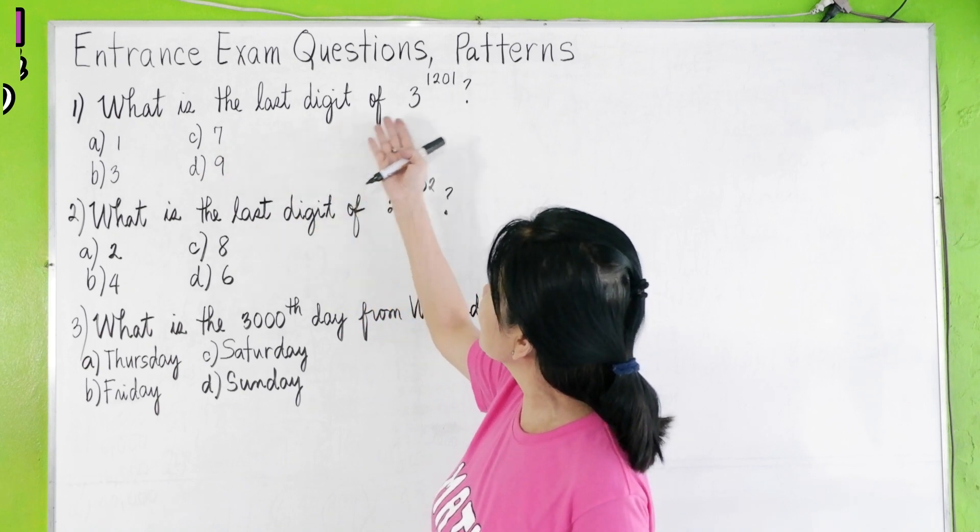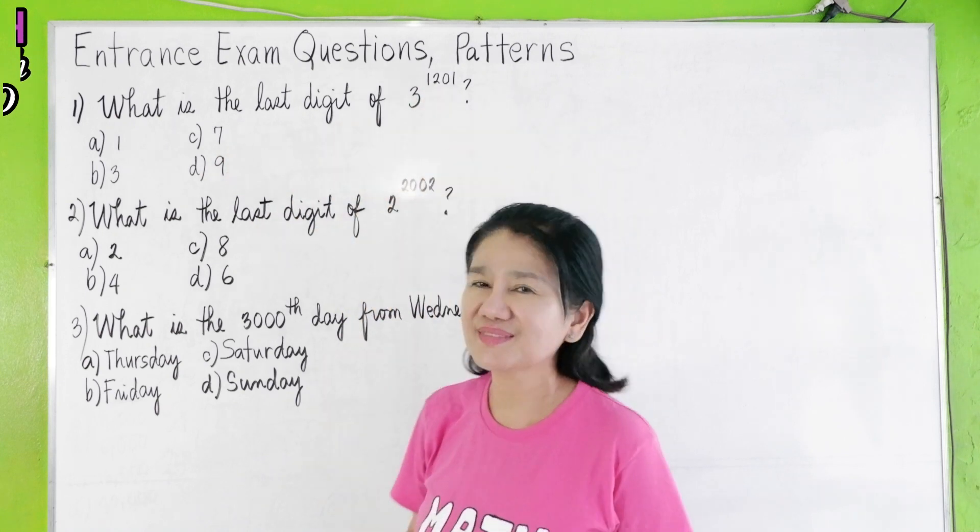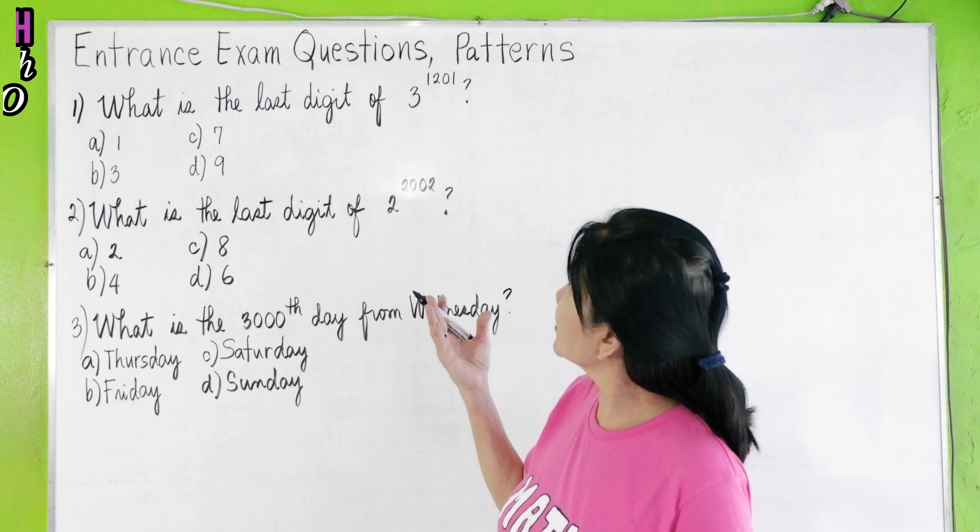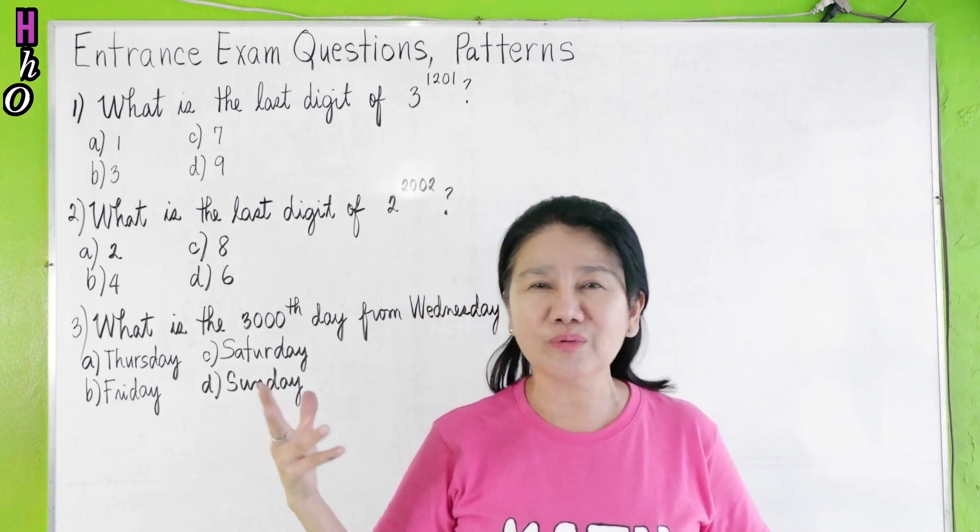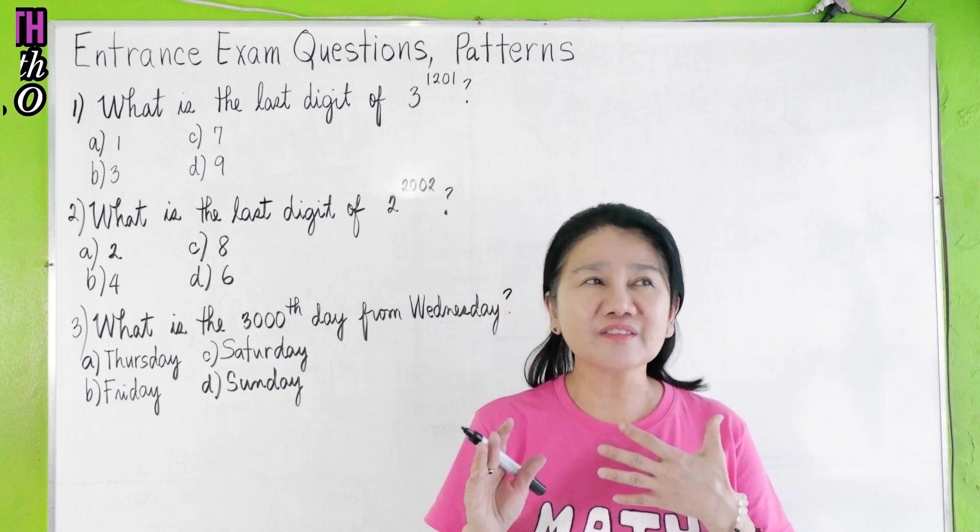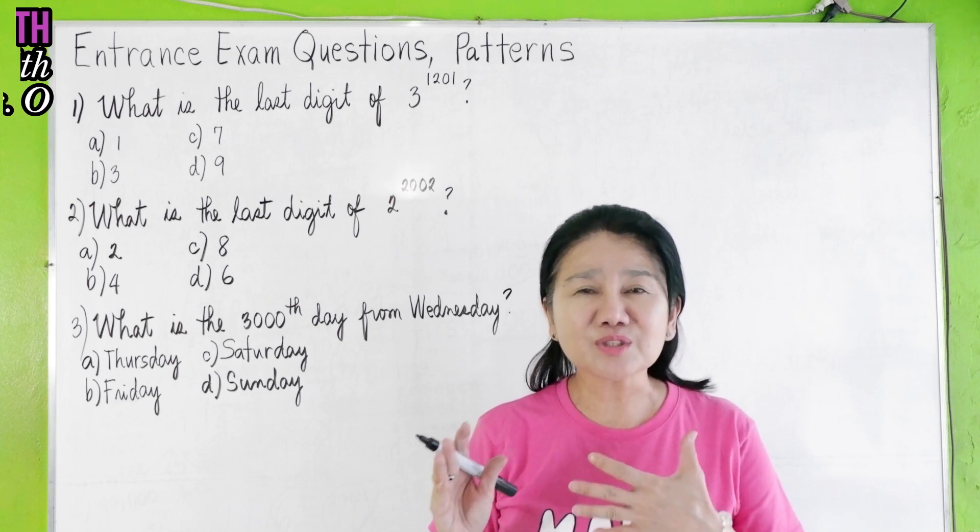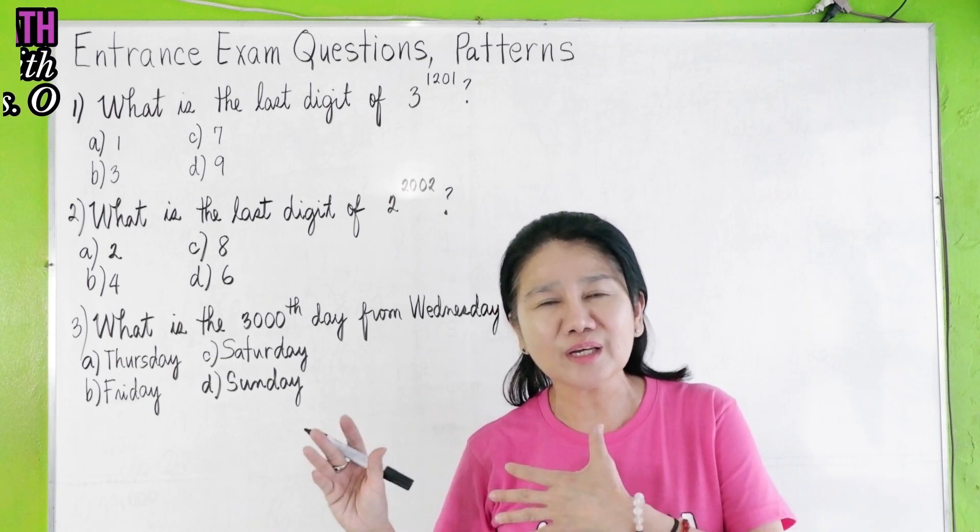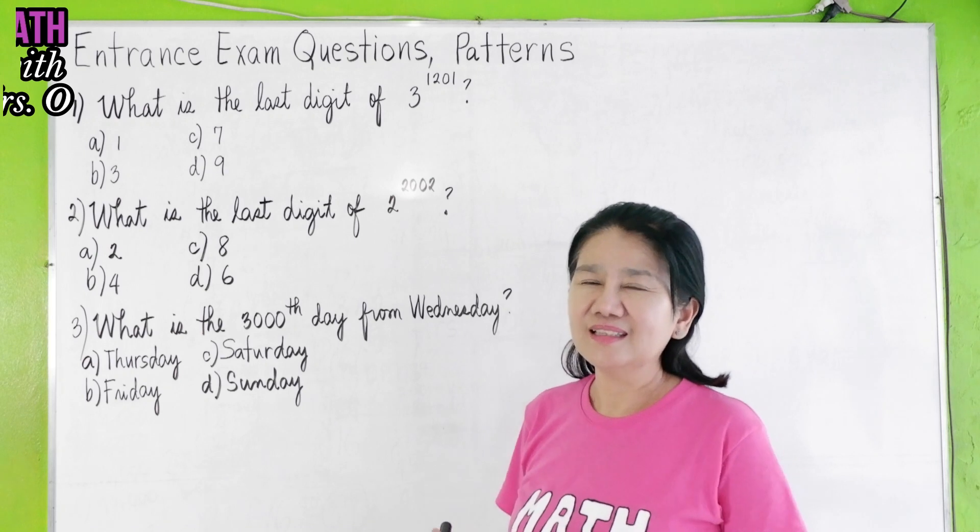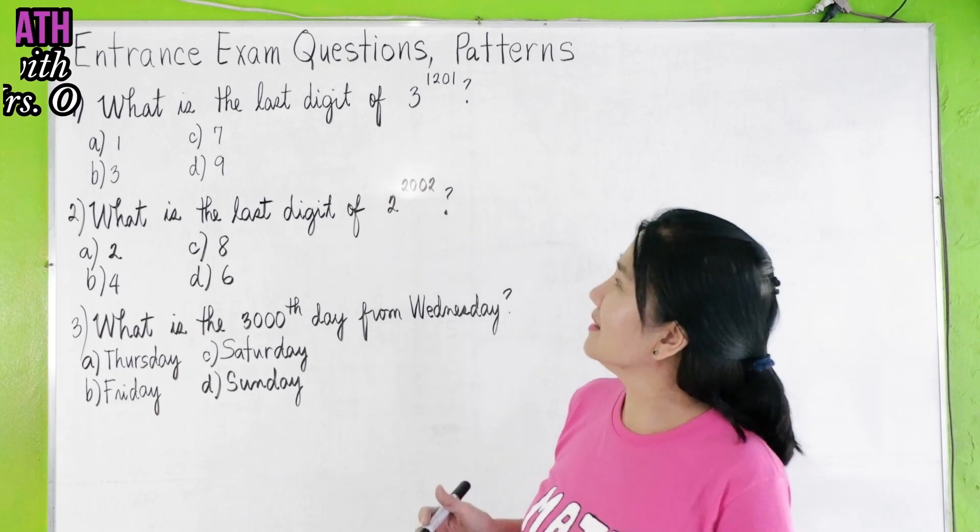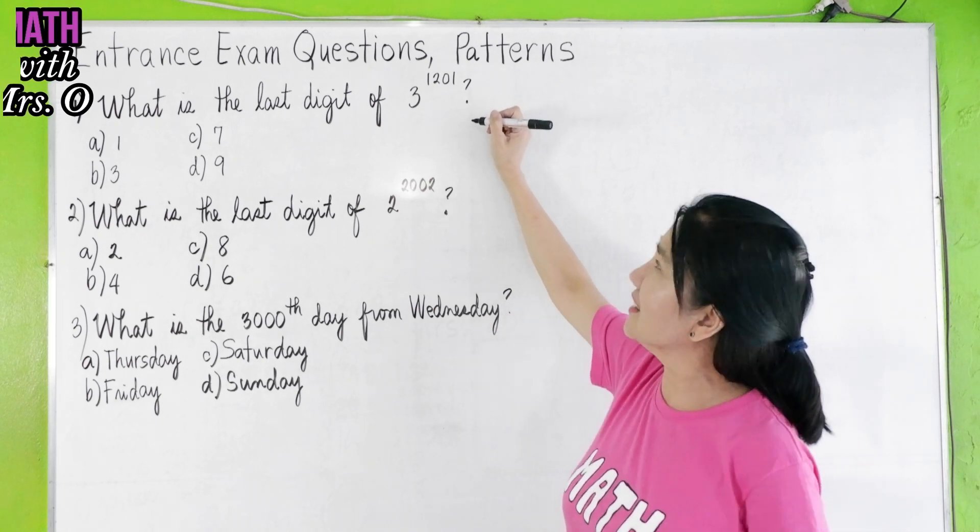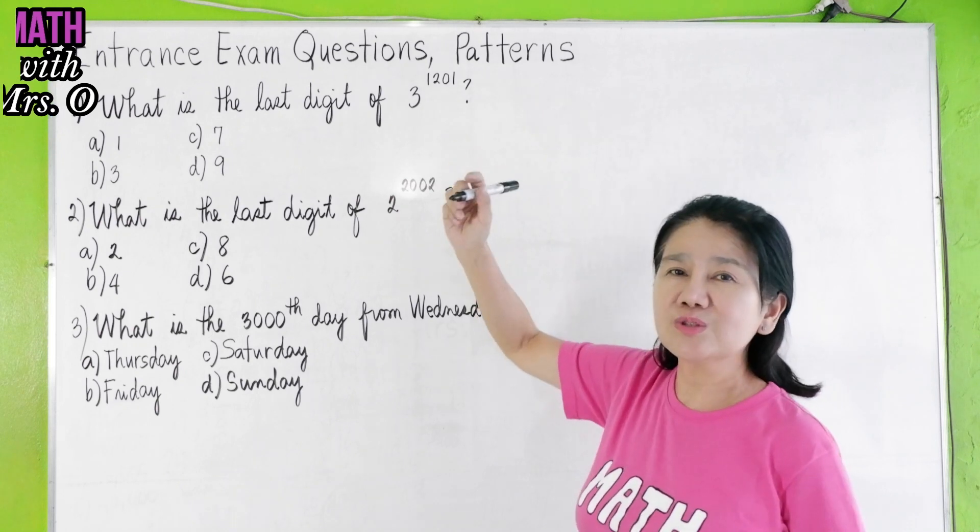What is the last digit of 3 to the 1,201? If you're going to solve 3 raised to 1,201, it will take you hours before you're able to solve it. Imagine multiplying 3 times 3, 9 times 3, 27 times 3, and so on 1,201 times. They ask these questions because there is a shortcut in getting the last digit. All you have to do is to look for a pattern.